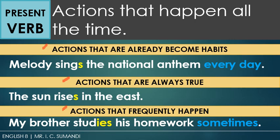Actions that have already become habits are actions that habitually happen. For example, Melody sings the national anthem every day. Actions that are always true are facts — for example, the sun rises in the east. Actions that frequently happen are actions that always, sometimes, or never happen. For example, my brother studies his homework sometimes. But what is the verb in present form?